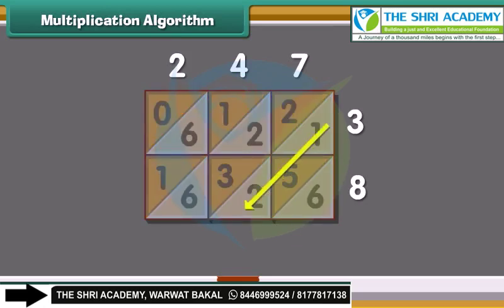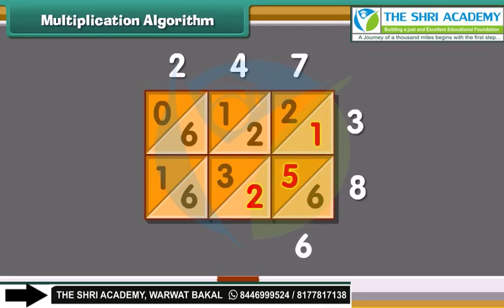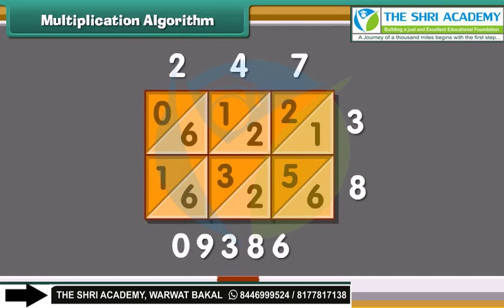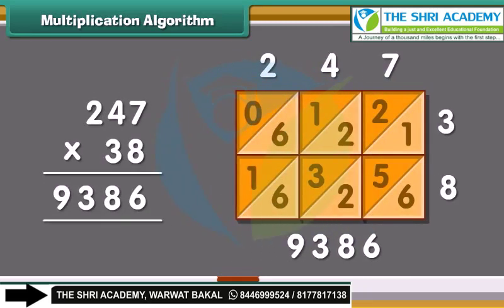Now start at the bottom and add down the diagonal strips. Write 6 as it is. 2 plus 5 plus 1 is 8. 6 plus 3 plus 2 plus 2 is 13 — a 2-digit answer, so write 3 below and carry 1 to the next strip. 1 plus 6 plus 1 is 8; add the carried 1 to get 9. And 0 is 0. Reading the answer: 0, 9, 3, 8, 6. Thus, 247 multiplied by 38 is 9386.